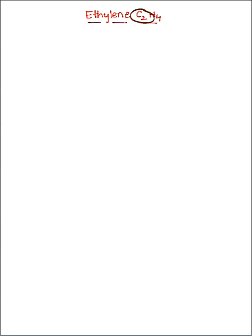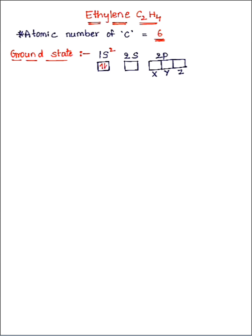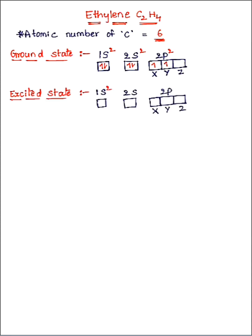Let's take ethylene as an example — its molecular formula is C2H4. In C2H4 there are two carbon atoms, and these carbon atoms undergo sp2 hybridization in the excited state. To understand this, we consider the carbon atom in its ground state: 1s has two electrons, 2s has two electrons, and in 2p there is one electron in the x orbital and one electron in the y orbital. In the excited state, one electron from 2s jumps into the 2pz orbital.